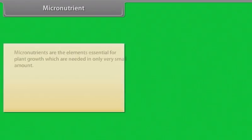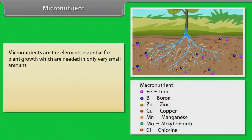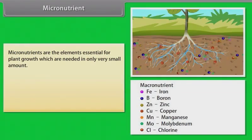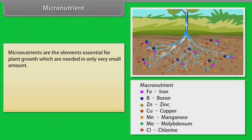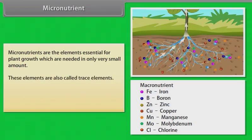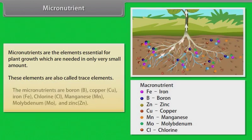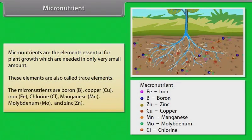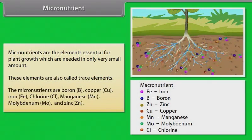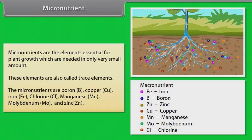Micronutrients are the elements essential for plant growth which are needed in only very small amounts. These elements are also called trace elements. The micronutrients are: boron, copper, iron, chlorine, manganese, molybdenum, and zinc.